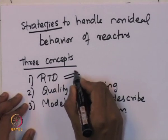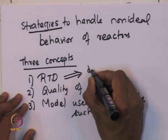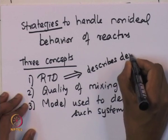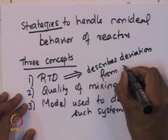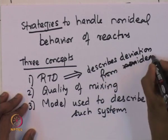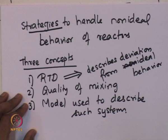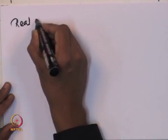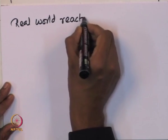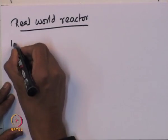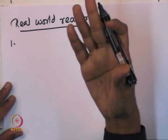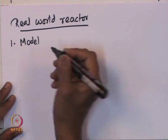Several examples will be shown to explain each of these concepts. The RTD describes the deviation from ideal behavior. The residence time distribution captures the deviation from ideal flow behavior. The first step towards handling a real world reactor is basically to model it as an ideal reactor — that is, to assume the reactor is either a PFR or a CSTR.